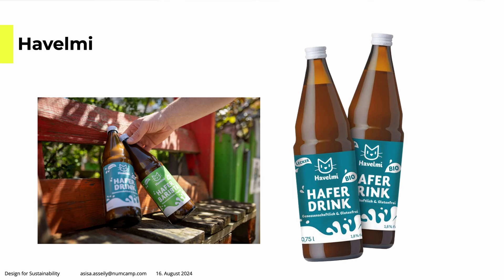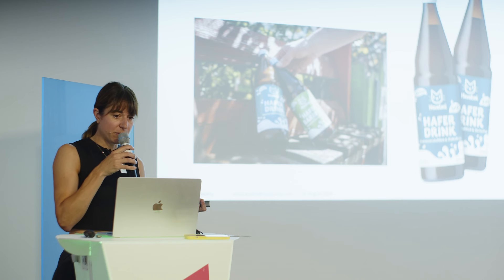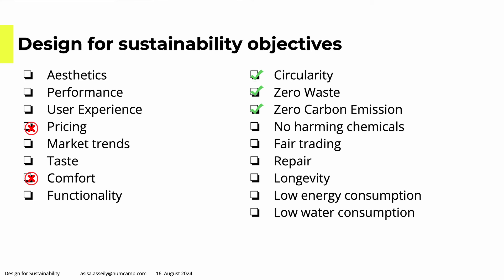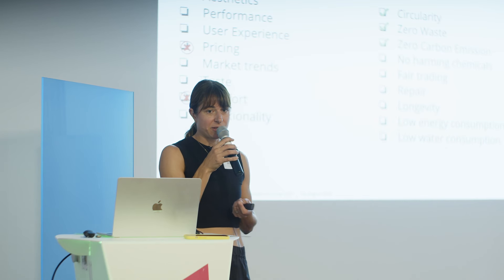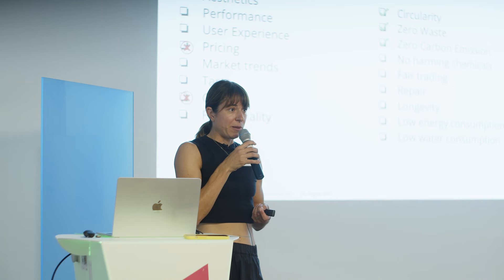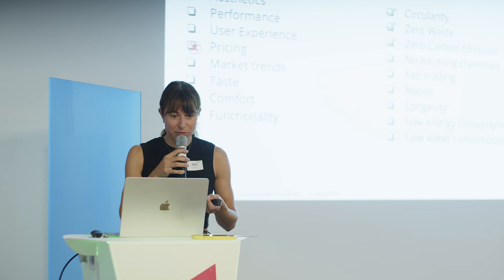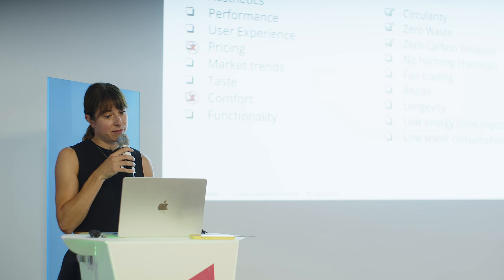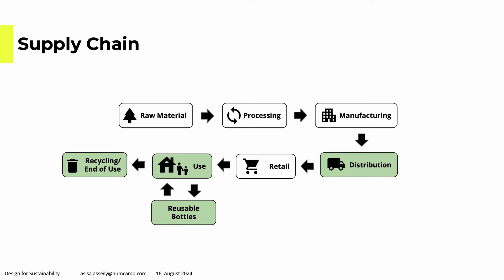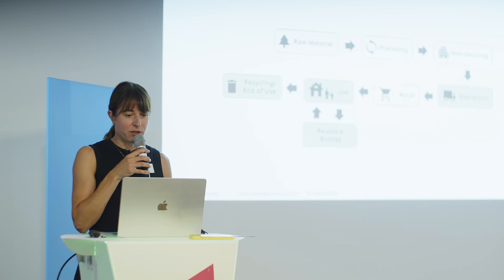Back to the oat drink startup: they chose glass bottles and produce locally in Brandenburg. From classic design objectives, this means a higher price and less comfort — glass bottles are heavy, especially on a bike. But from impact objectives: circularity, because the bottles stay in the cycle; zero waste; and near-zero carbon emission, because production and distribution are local — really short supply routes.